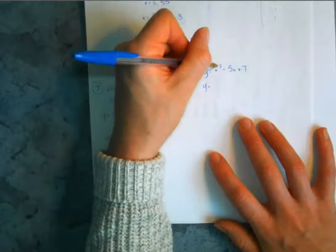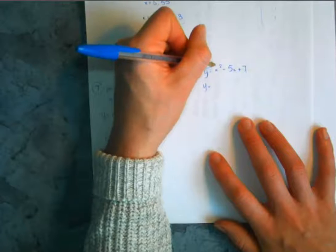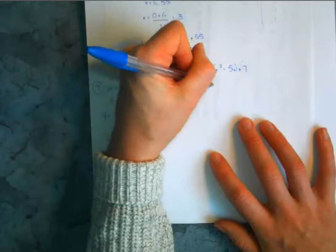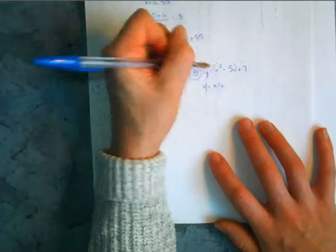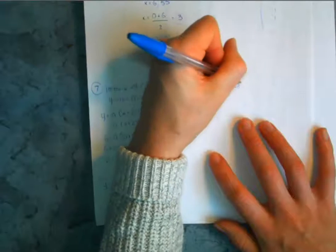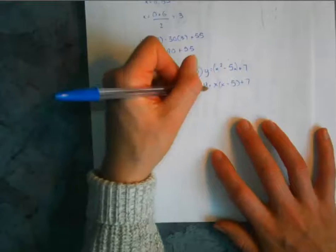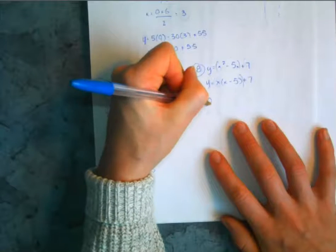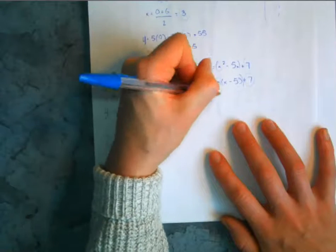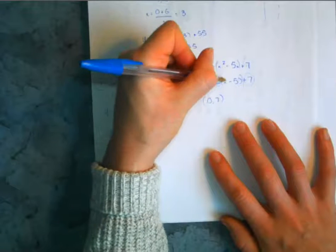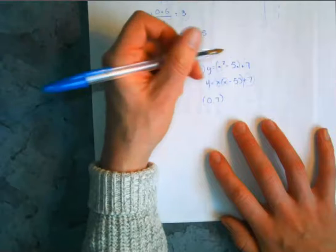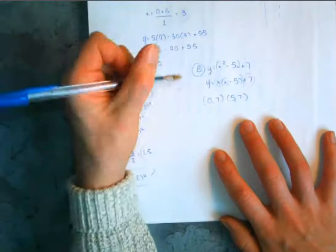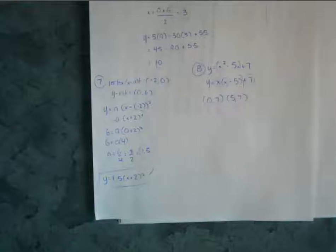I thought it was simpler to find points by factoring out a little bit. I couldn't find two numbers that multiplied to 7 and added to 5, so instead I factor x out of the first two terms: x times (x minus 5), plus 7. Setting this equal to 0, x could be 0, giving y equals 7; or x could be 5, since 5 minus 5 equals 0, also giving y equals 7. So we have two points on the graph: (0, 7) and (5, 7).